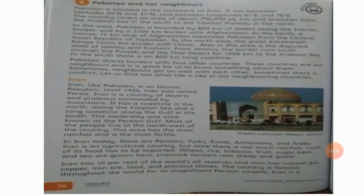In the west, Pakistan is bounded by 800 kilometers of desert along the Iranian border and by a 2,200 kilometer border with Afghanistan. In the north, a narrow 15 kilometer strip of Afghanistan separates Pakistan from the Central Asian Republic of Tajikistan. To the north, the great Karakoram range forms a border with China. Also in this area is the disputed state of Jammu and Kashmir.